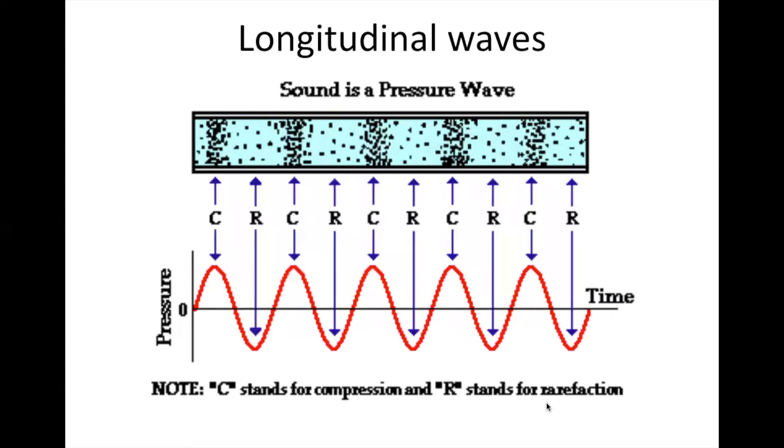Longitudinal waves like sound are pressure waves. Those series of compressions and rarefactions travel across the room. Notice that compressions are the sections with high pressure, and rarefactions are the sections with low pressure. The C's in this case stand for compression. The R's stand for rarefaction. And those repeat themselves as they travel across the room.